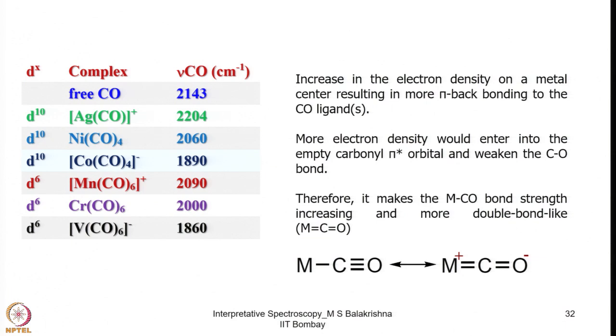Here I have listed a series of complexes having D10 and D6 electronic configuration, including both early and late transition metals. Early metals, despite having electron deficiency, are very good pi donors; in contrast, late metals are rich in electrons but reluctant pi donors. For example, in a D10 system with silver and a CO group, Ag is in the plus state and the stretching frequency is 2204 cm⁻¹, much larger than free gaseous CO at 2143 cm⁻¹.